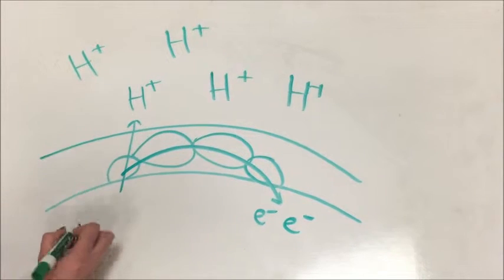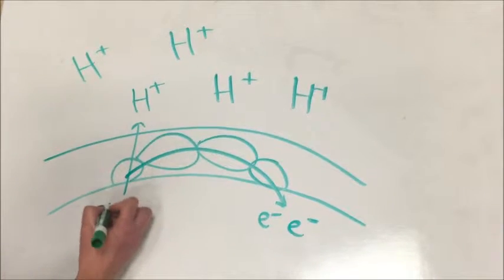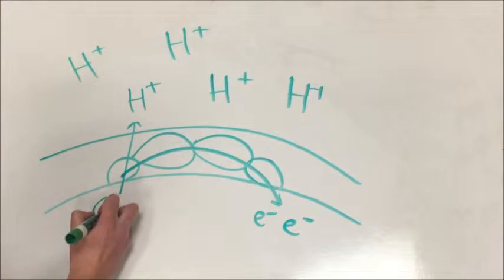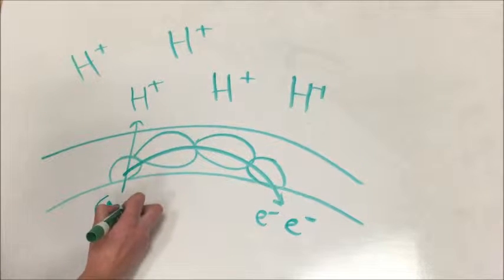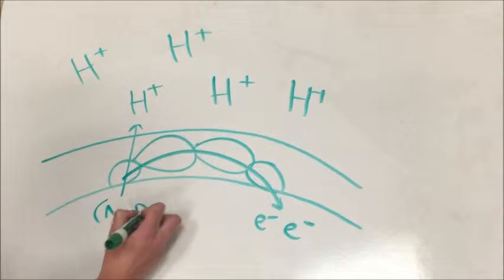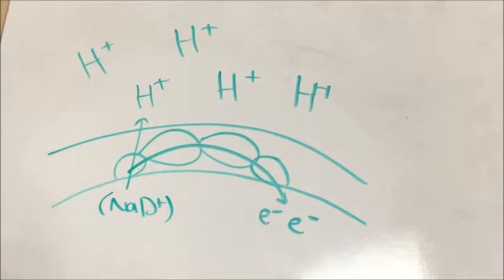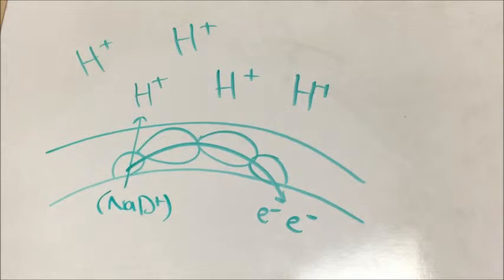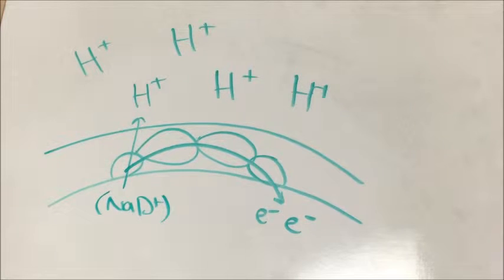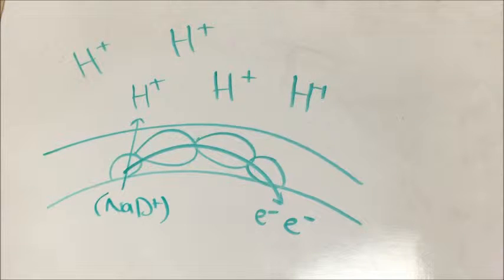The free energy that has been released is now free to be used to move protons across the membrane. The electron transport chain has a greater purpose than simply turning reducing power into free energy. As the electrons jump from protein to protein, releasing free energy, certain proteins on the chain, such as coenzyme Q, will employ this energy to move protons against the gradient.